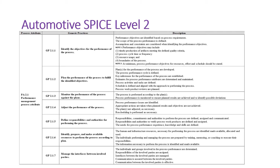GP 2.1.2 is talking about planning the performance of the process. GP 2.1.3 is talking about monitoring — tracking the performance. GP 2.1.4 is talking about adjusting, rescheduling, and revising the plan. GP 2.1.5 is talking about roles, responsibilities, and authorities — who will do what and what skillset is needed. GP 2.1.6 is talking about identifying, preparing, and making available resources to perform the processes according to the plan.